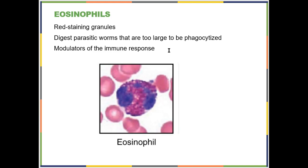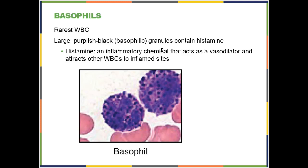Eosinophils have granules that stain red because they absorb a stain called eosin, named after Eos, the god of the sun. Eosinophils digest parasitic roundworms using hydrolytic enzymes — the worms are too large to be phagocytized. Basically all of your white blood cells compose your immune system and they all communicate with each other, so they all modulate the immune response in one way or another.